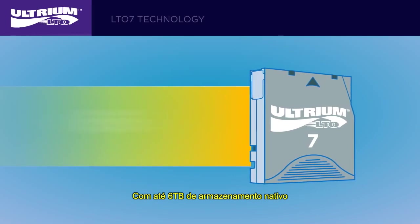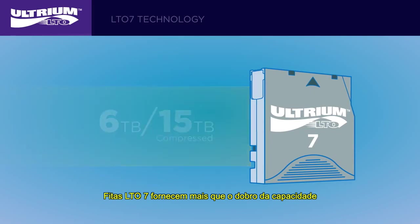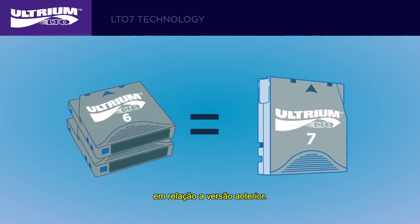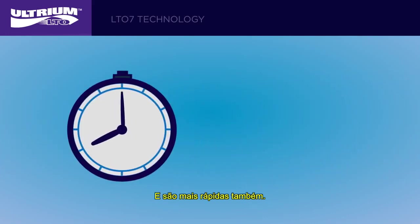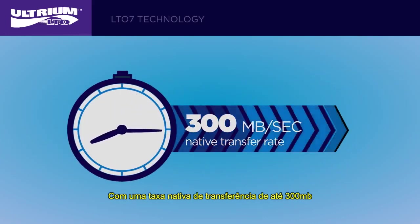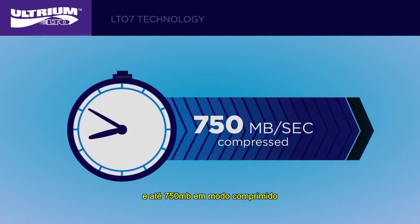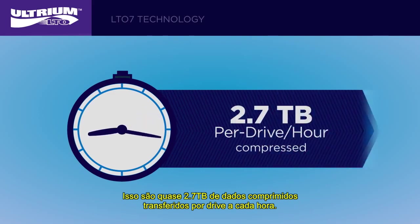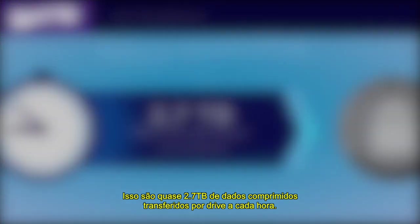With up to 6 terabytes of native storage and 15 terabytes compressed in a single cartridge, LTO7 tapes provide more than double the compressed capacity of the previous generation of LTO tape. It's faster too, with up to 300 megabytes per second native transfer rate, up to 750 megabytes per second compressed — that's nearly 2.7 terabytes of data transferred per drive, per hour, compressed.